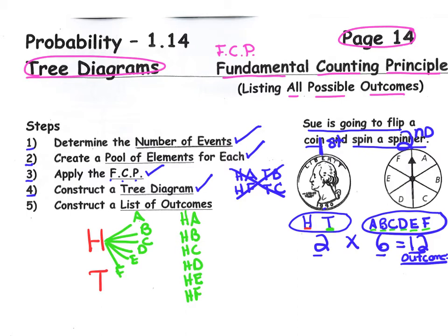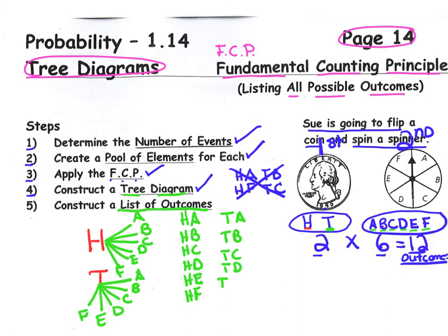But now let's consider tails. What happens if you get a tails on the coin? You could have tails with A, tails with B, tails with C, D, E, and F. Let's take that tree diagram and make a list of outcomes beginning with tails: tails-A, tails-B, tails-C, tails-D, tails-E, tails-F. There are six beginning with tails as well.